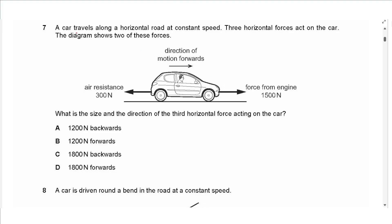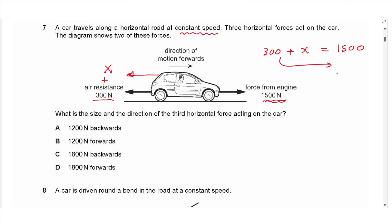Question 7: A car travels along a horizontal road at constant speed with three horizontal forces acting on it. Two forces are shown. Since speed is constant, forward forces must equal backward forces. We need an extra backward force x, so 300 + x = 1500, giving x = 1200 N backwards. Answer is A.